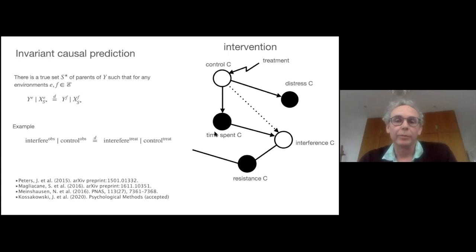If we see that both in the observational setting and in the treatment setting, the intervention setting, we would find that time spent controls for the relation with interference, so we find no connection or causal relation between control and interference, then we'd have evidence for invariance and we would say yes there might be a causal relation there. That's the method that we've been using thus far. Thank you.